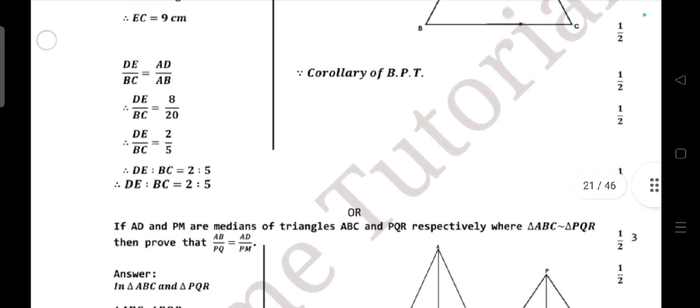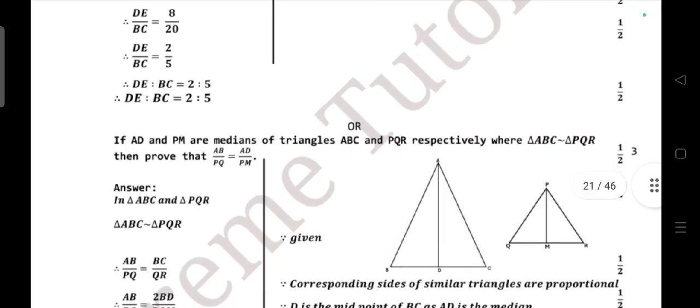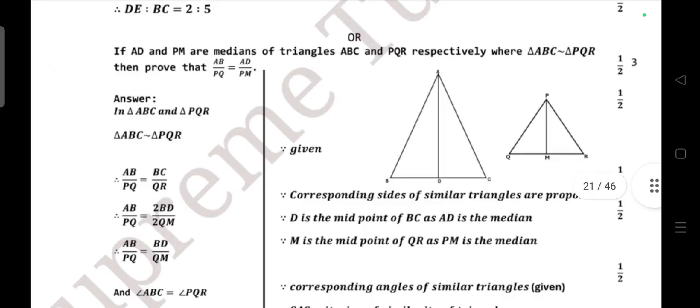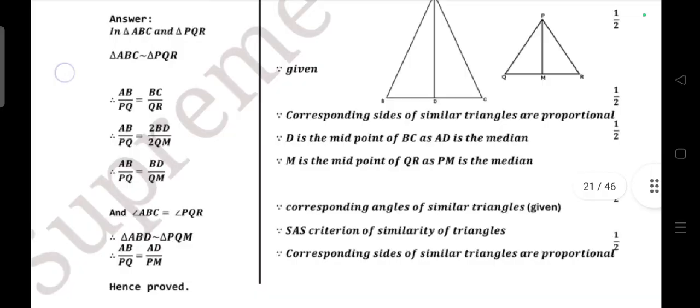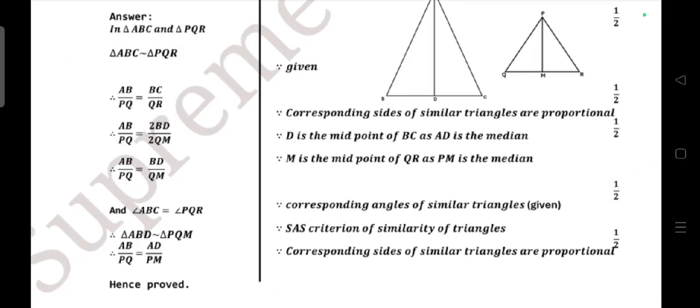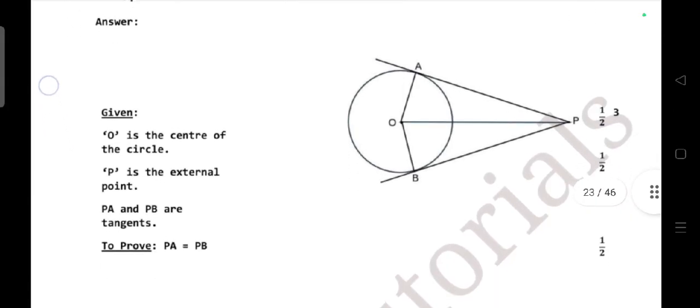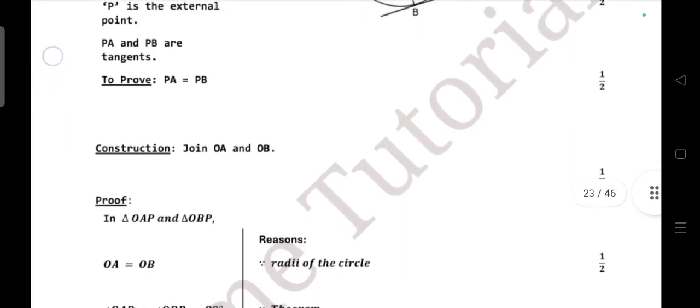The length of a tangent drawn from an external point to a circle are equal. Or question: if AD and PM are the medians of the triangles ABC and PQR respectively, where triangle ABC is similar to triangle PQR, then prove that AB/PQ = AD/PM. Prove that the length of tangents drawn from an external point to a circle are equal. This is a very important theorem. This is 100% they'll ask.